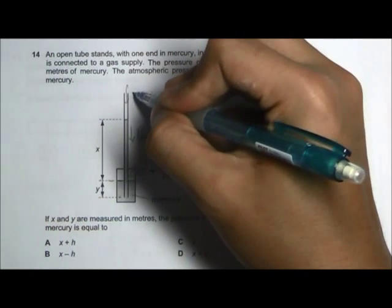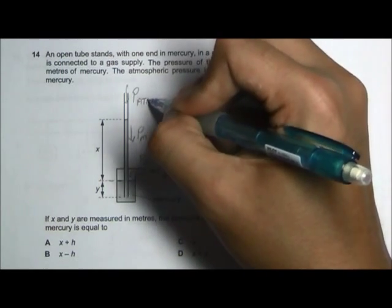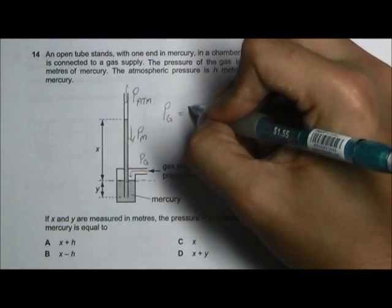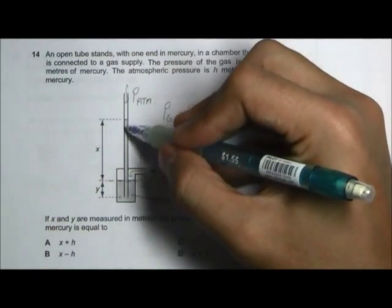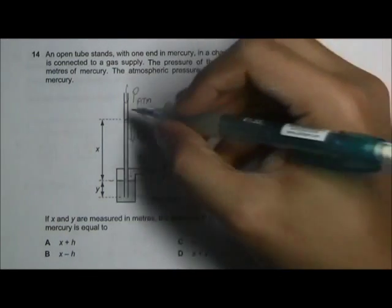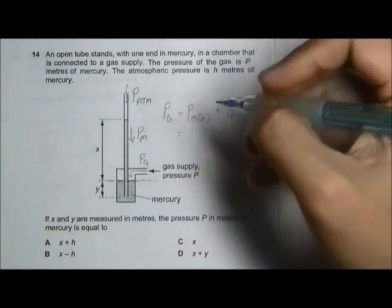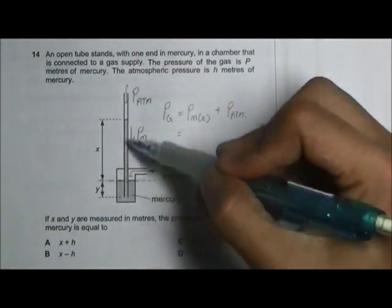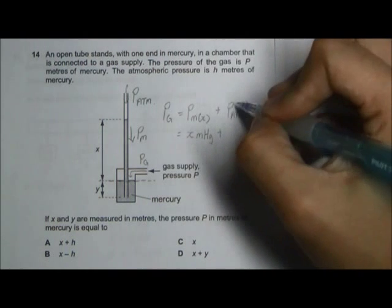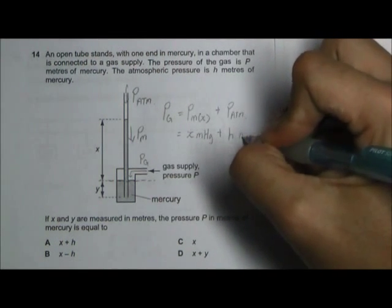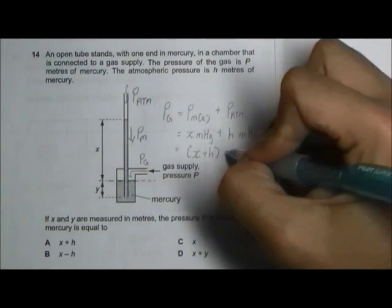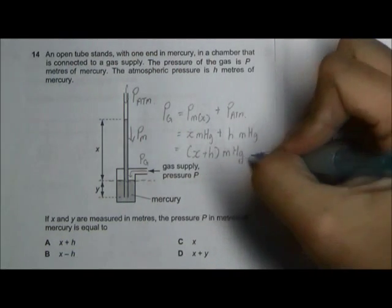And on top of it, we have the atmospheric pressure. Let it be pressure ATM. So if you write out the equation, it will be pressure of the unknown gas is equal to the pressure acting by this column of mercury plus the atmospheric pressure. And the pressure of this mercury column is actually X meter of mercury. And the atmospheric pressure is H meter of mercury. So the answer should be X plus H meter of mercury. Answer A.